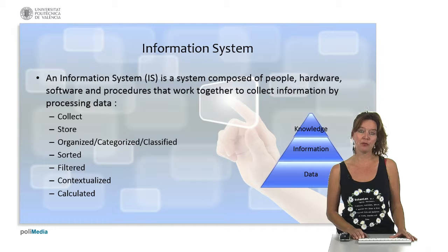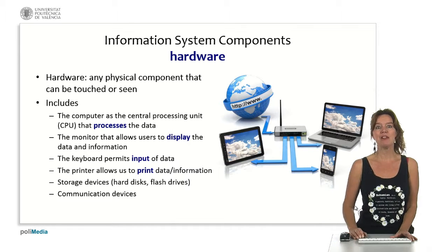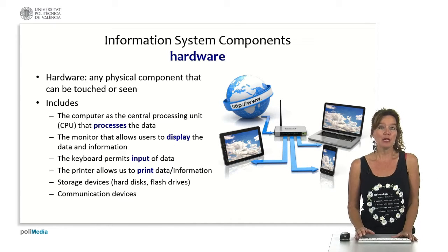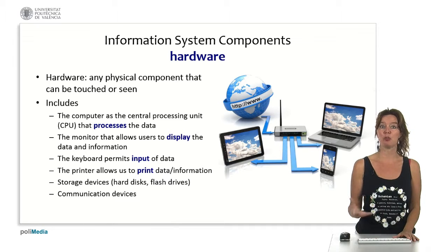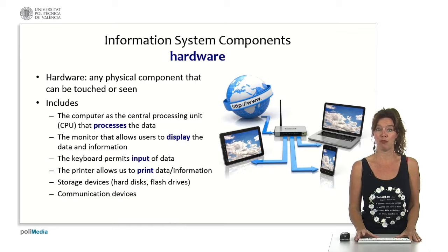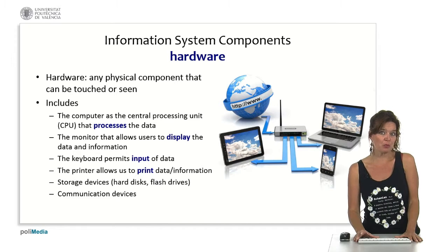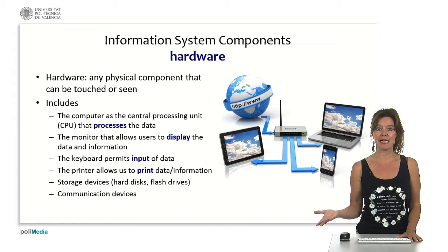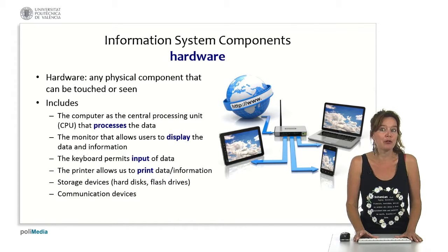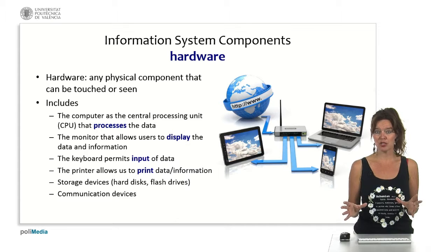Let's look at the different parts that an information system is composed of. First we have hardware. Hardware in an information system is any physical component that can be touched or seen — basically any physical component of a computerized system that you can break. It includes the computer with its central processing unit, a monitor to display information, a keyboard to input data, a printer, storage devices like hard disks, flash drives or USB sticks, and communication devices like mobile devices, tablets, or modems connected to the system.